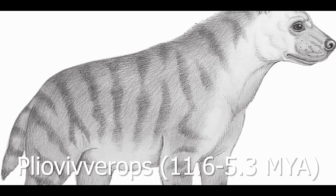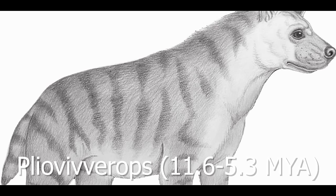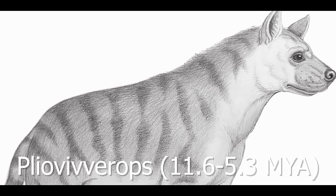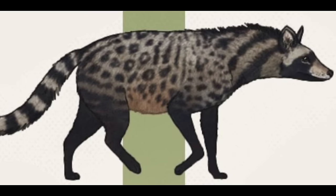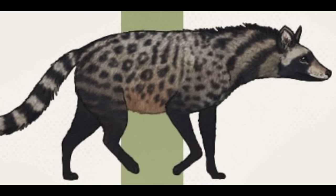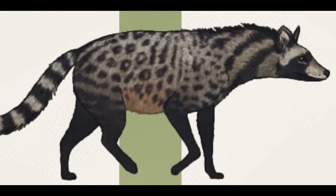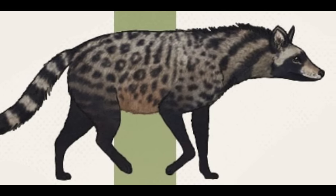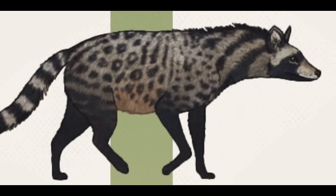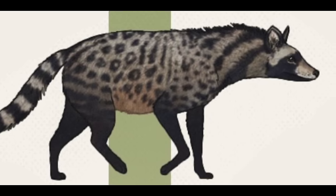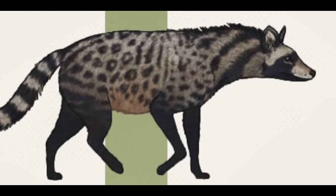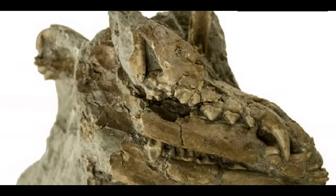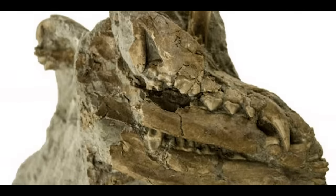Following Protictithereum was Plioviverrops, which evolved around 11 million years ago and was prominent throughout southern Europe. This was a fox-sized genus of hyena with a similarly fox-like skull. They retained the civet-like body plan from earlier members. However, this genus lost its retractable claws and was a much more terrestrially adapted predator, with stronger teeth and more puncture-crushing cusps.